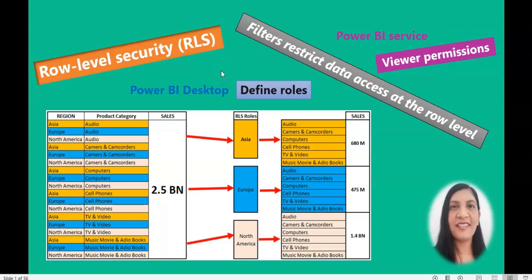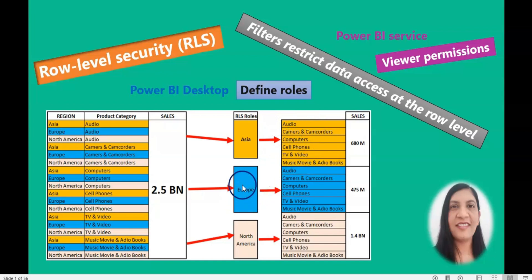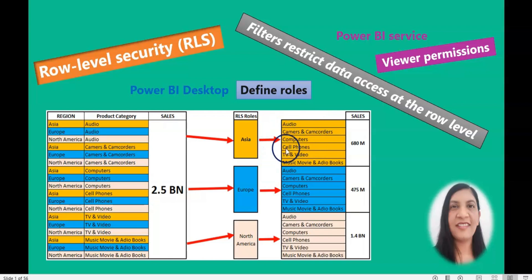For example, in this picture you can see I have my sales data and I have three different regions. I wanted to set up a filter so that only Asia continent employees can view Asian data, Europe employees can only view Europe data, and North America employees can only view North America data. For that, I need to create row level security roles according to the region, apply the rules, and then give permissions in Power BI service to employees so they can only view their region data.